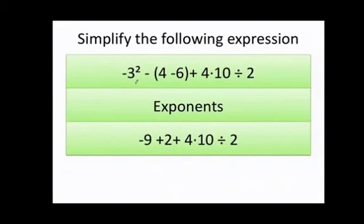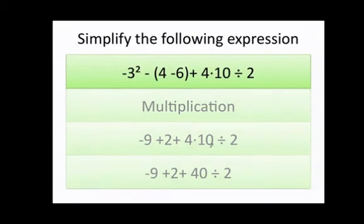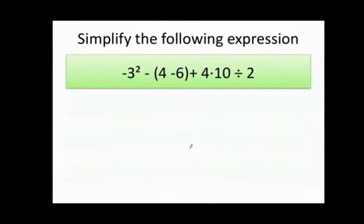If this was like this inside the parentheses, then that would be positive 9. Alright, let's move on. Multiplication. Well, now I'm going to have to multiply 4 times 10. That's 40. Then I have division. Well, here I have 40 divided by 2, which is 20.